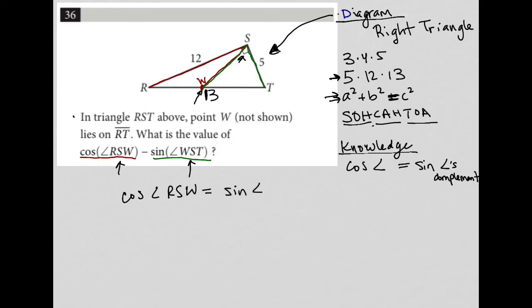And because angle RSW is complementary to angle WST, that means that the cosine of angle RSW is equal to the sine of angle WST.